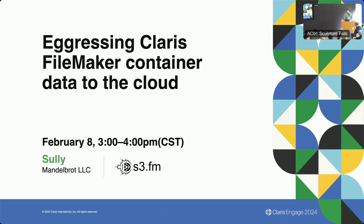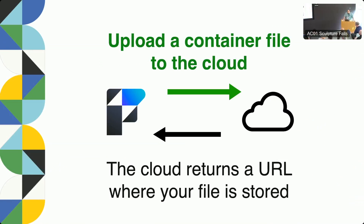We're going to be talking about container data. This is our circle of life — it's a two-part transaction. Some of you may already understand that this slide is kind of upside down. First, we're going to talk about what you can do with the data from the cloud, and then we're going to talk about how we're going to get that data to the cloud. A little bit backwards. I'm going to use some terms interchangeably: upload from container, copy to the cloud, put it on the internet all refer to getting your data out of FileMaker containers and up to the cloud. If I say in the cloud, stored in a URL, in AWS S3, that's where your data lives and there's a URL for it.